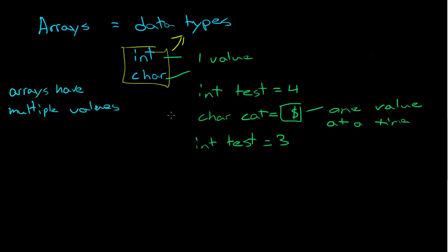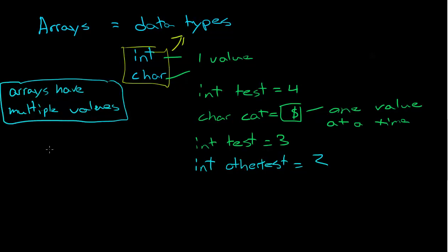You might be thinking, okay, why do we need to have multiple values? I could just have int test equals three and int other_test equals two, and then I have two values, just by different names. Well, arrays get very useful if you have long lists of numbers — like if you have a thousand data measurements. You're not going to want to go int data_measurement_number_one, int data_measurement_number_two. You're just going to want to have an array and put all those five thousand values in it.